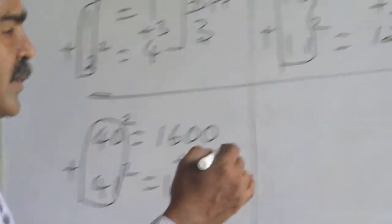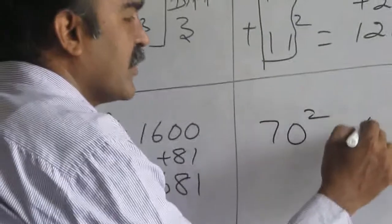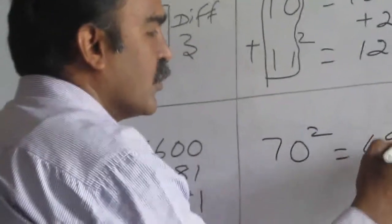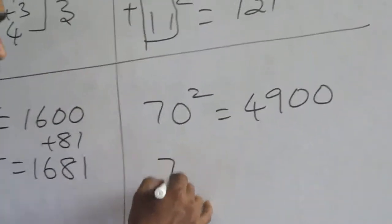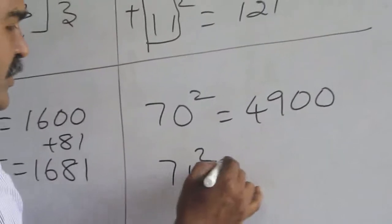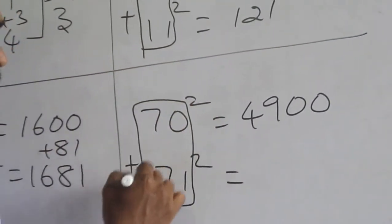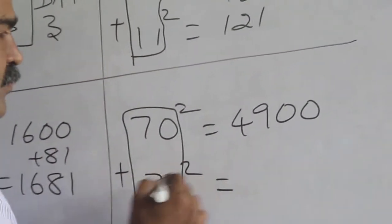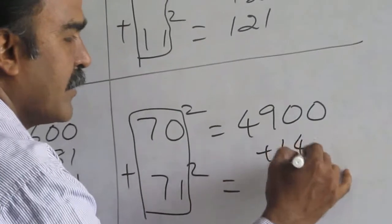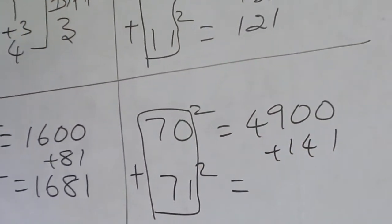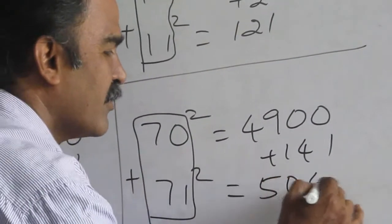Let us go for one more number. 70 square. What is 70 square? 4900. What is 71 square? Just you add the base number here. What is 70 plus 71? 141. Add up here. 4900 plus 141 is 5041.